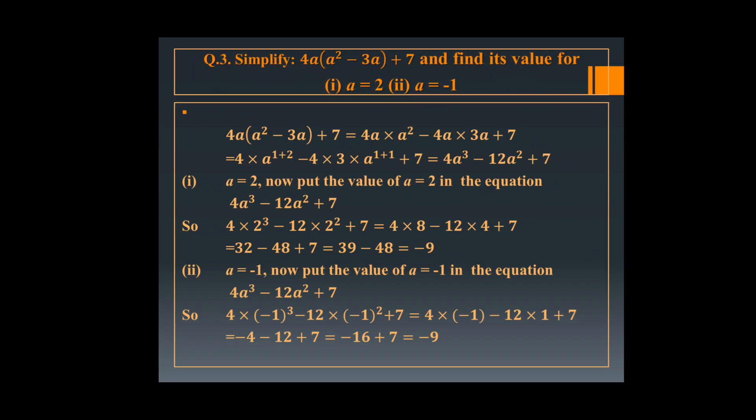After this, we will put the value of A equal to 2 in the polynomial: 4A cube minus 12A square plus 7. A cube means 2 cube. So 4 into 8 equals 32, and 12 into 4 equals 48, plus 7. After adding and subtracting, you will find minus 9 when we put the value of A equal to 2.